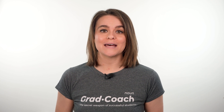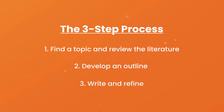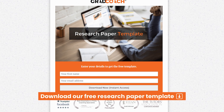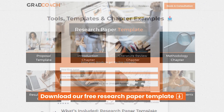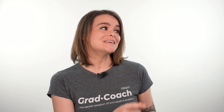We've now covered our tried and trusted three-step process to write a high-quality research paper. To recap: step one is to choose a research question and review the literature; step two is to plan your paper structure and draft an outline; and step three is to take an iterative approach to writing, focusing on critical writing and strong referencing. Remember, this is just a big-picture overview and there's a lot more nuance to unpack, so be sure to grab a copy of our free research paper template and check out the free resources below. If you enjoyed the video, please hit the like and subscribe buttons.